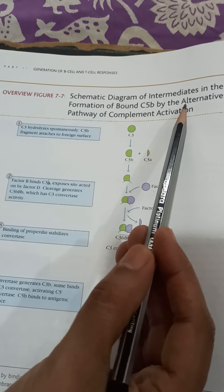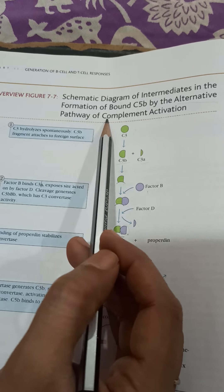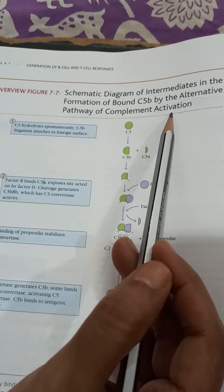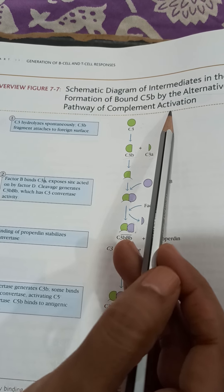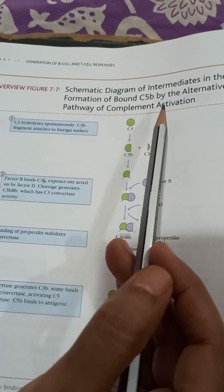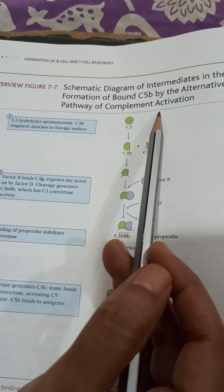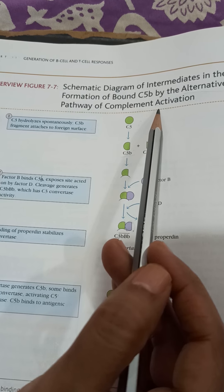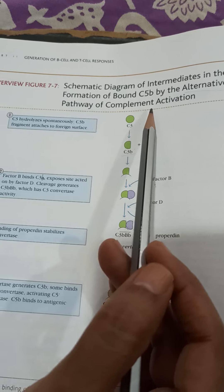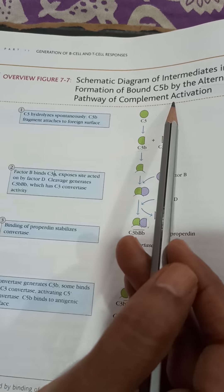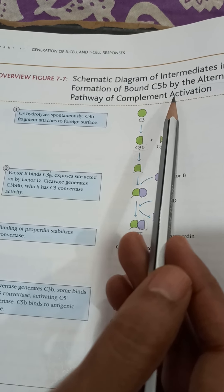Here we will discuss the second type of complement activation pathway: the alternative pathway. The important difference between the classical pathway, which we discussed earlier, and this alternative pathway is that for the classical pathway, antibodies are important. The complement binds to the Fc region of the antibody, thereby starting the classical pathway. But this alternative pathway is antibody independent.